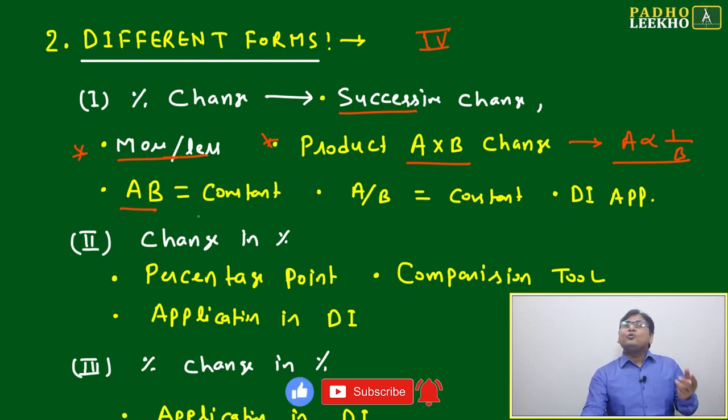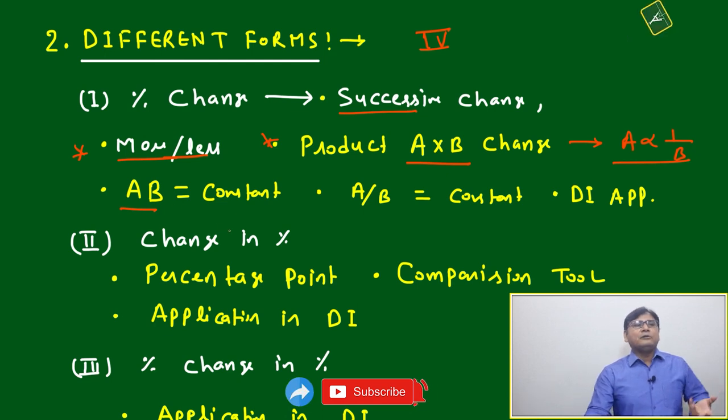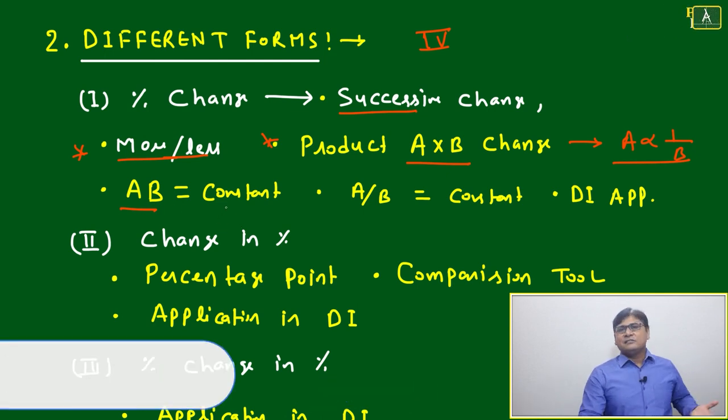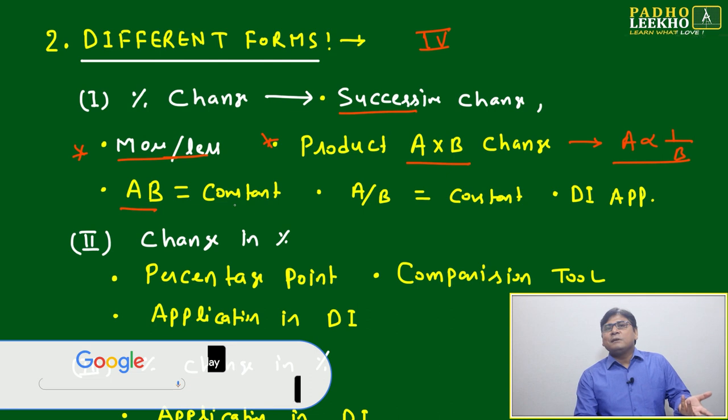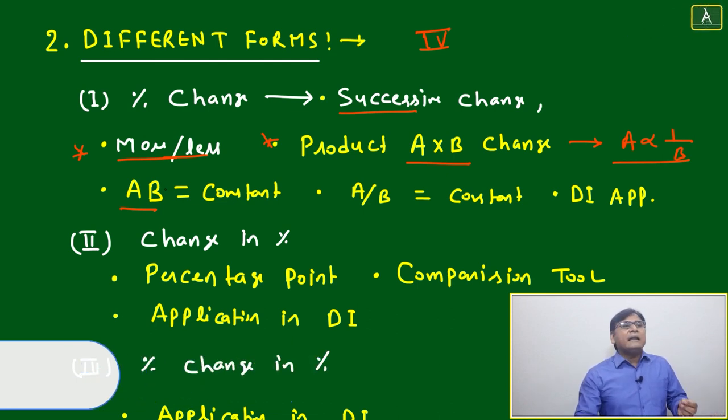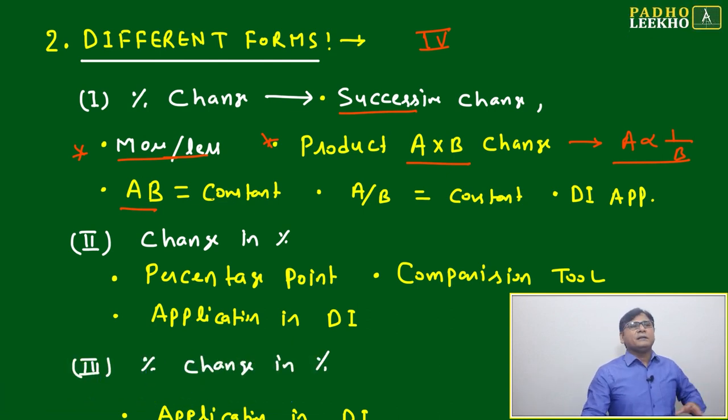In between, like A×B equal to constant. Based on the A×B equal to constant, many applications are there. Like distance equal to speed into time, area equal to length into width. After that, your income equal to savings plus expenditure - like that, so many examples are there based on the A×B equal to constant.